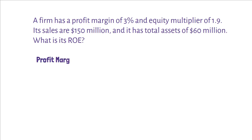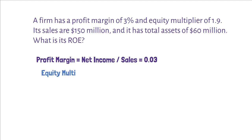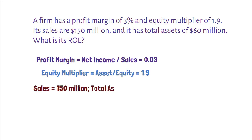Profit margin equals Net Income divided by Sales equals 0.03. Equity multiplier equals Assets divided by Equity equals 1.9. Sales equals 150 million. Total assets also given as 60 million.